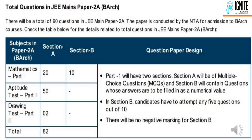In JEE Paper 2, we have 90 questions total: 20 questions in Maths, 50 questions in Aptitude, and 2 questions in Drawing tests. There is Section A and Section B. There are 20 questions in Section A and 10 questions in Section B.